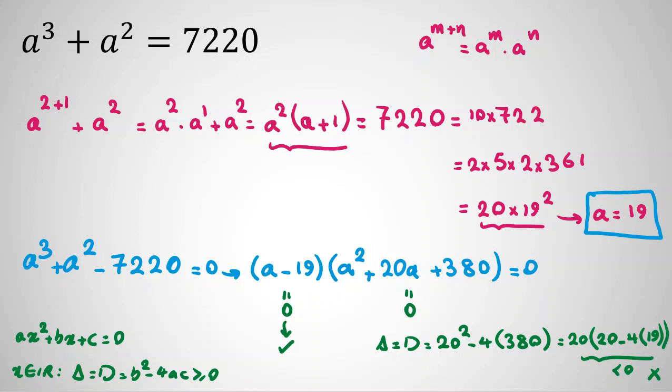It will be 20 times 20 minus 4 times 19, which will be less than zero.